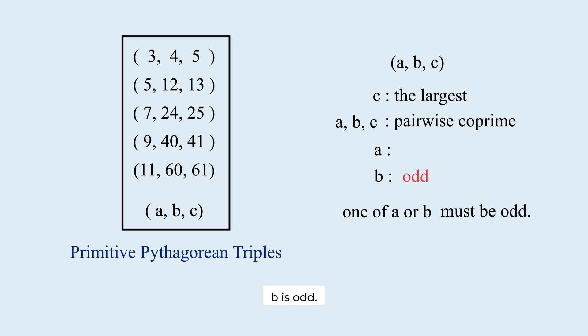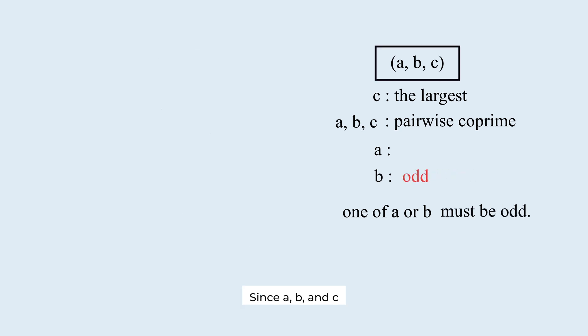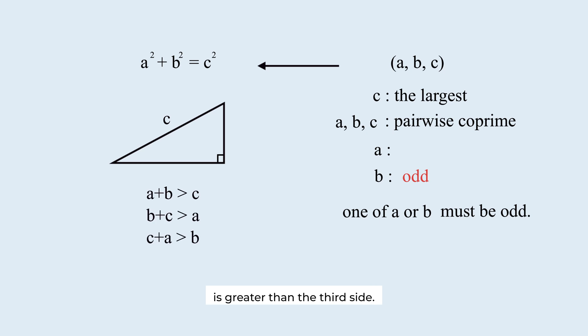Let's assume b is odd. Since a, b, and c satisfy the Pythagorean theorem, they represent the sides of a right triangle. Since c is the largest, c must be the hypotenuse. In any triangle, the sum of the two sides is greater than the third side. So, a plus b is greater than c. Let r be a plus b minus c.